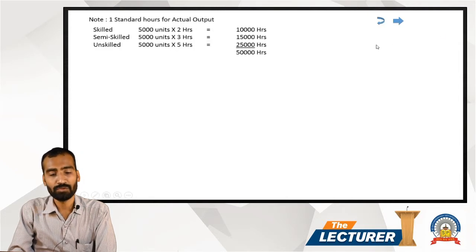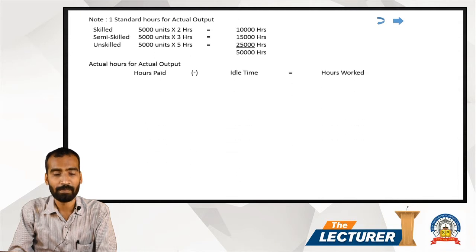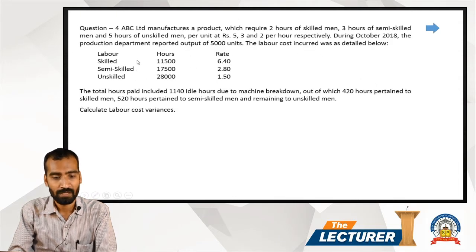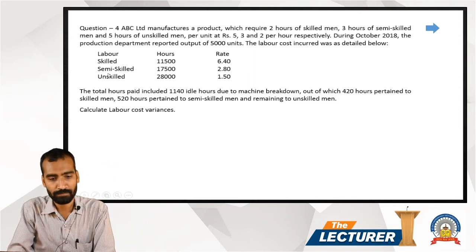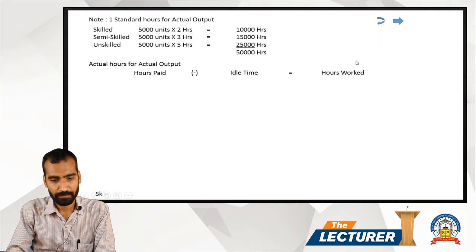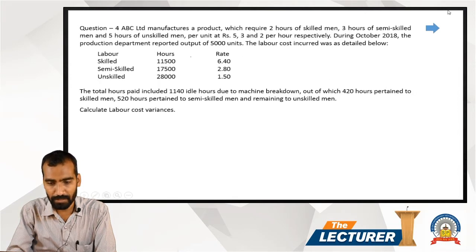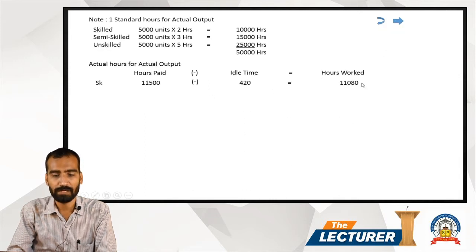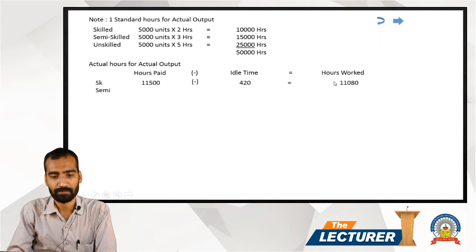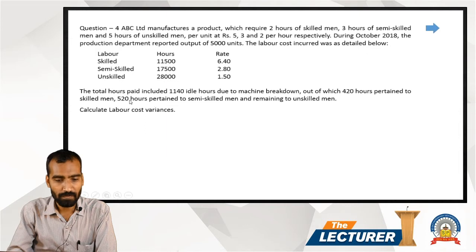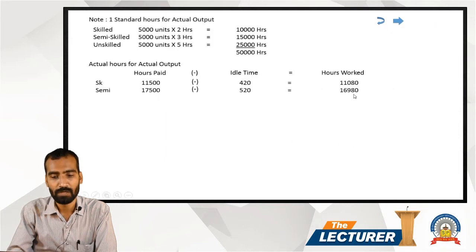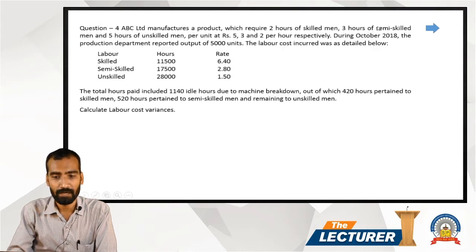Note 2: Actual hours worked = Actual hours paid minus idle time. Skilled: 11,500 − 420 = 11,080 hours worked. Semi-skilled: 17,500 − 520 = 16,980 hours worked.